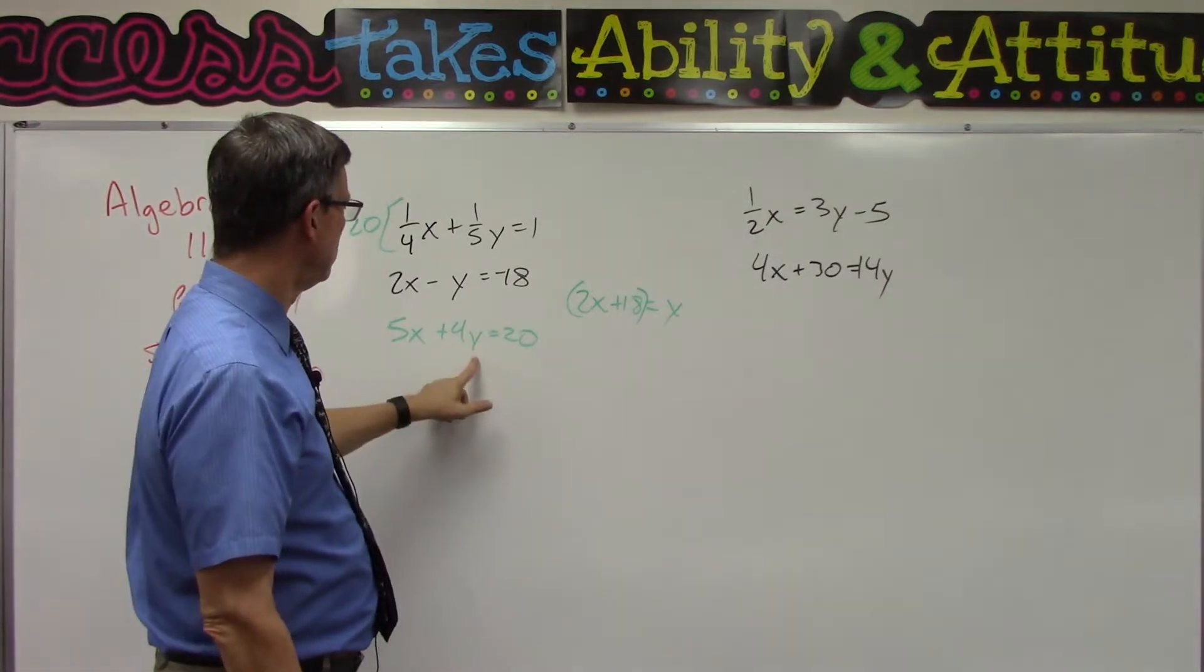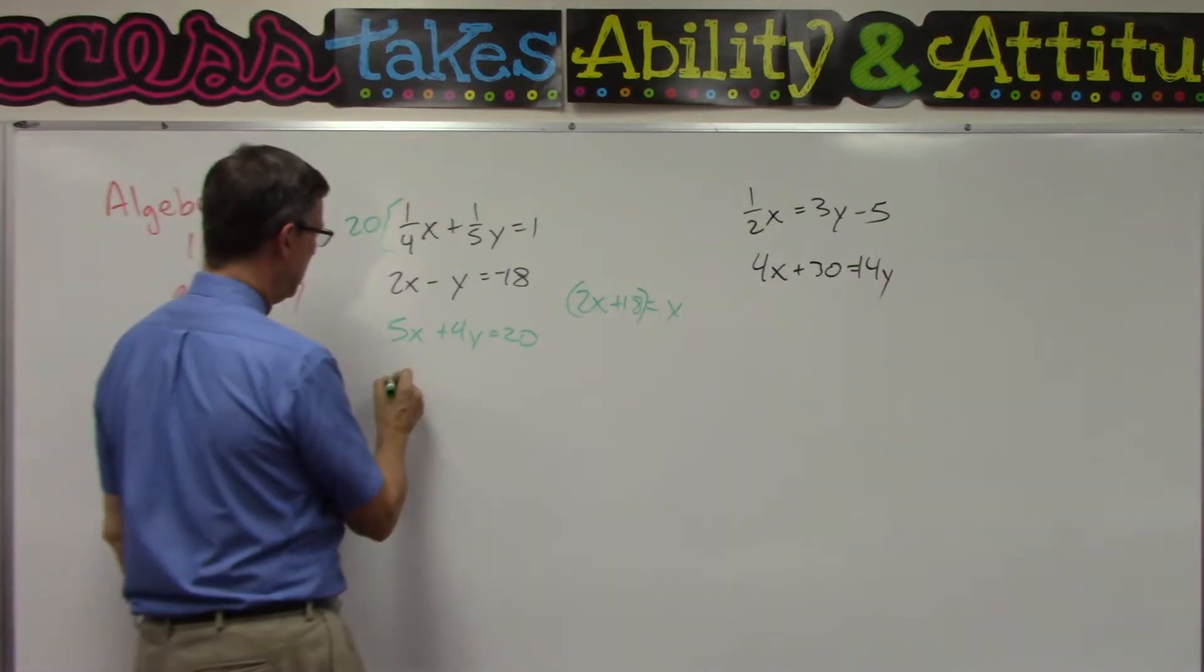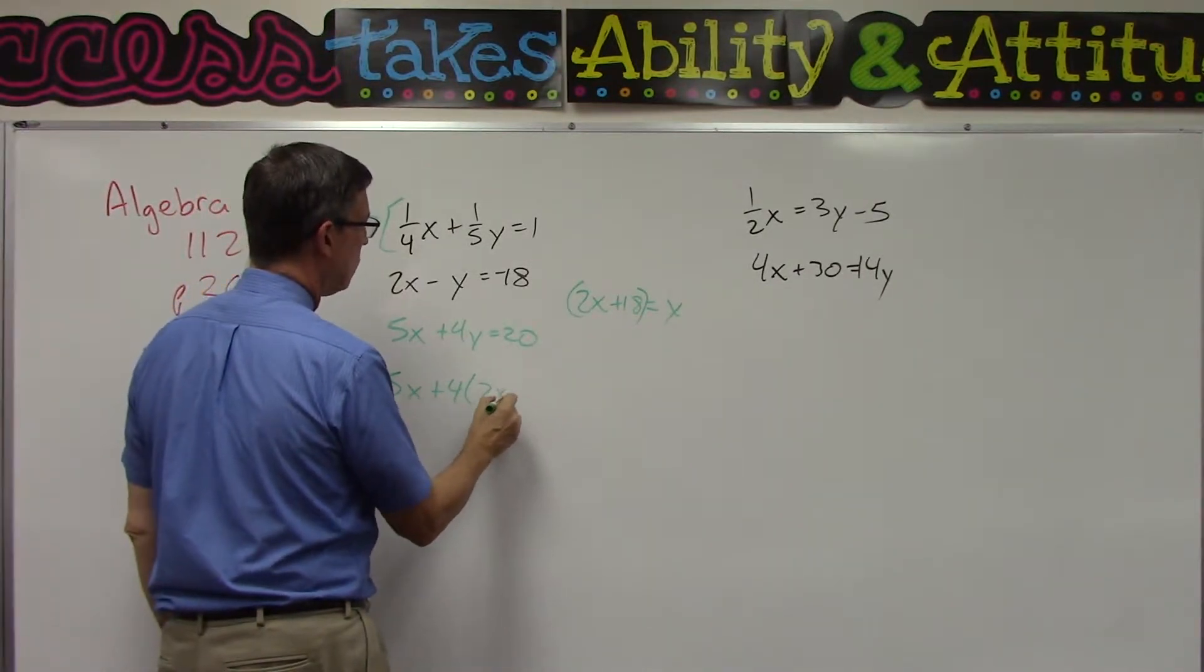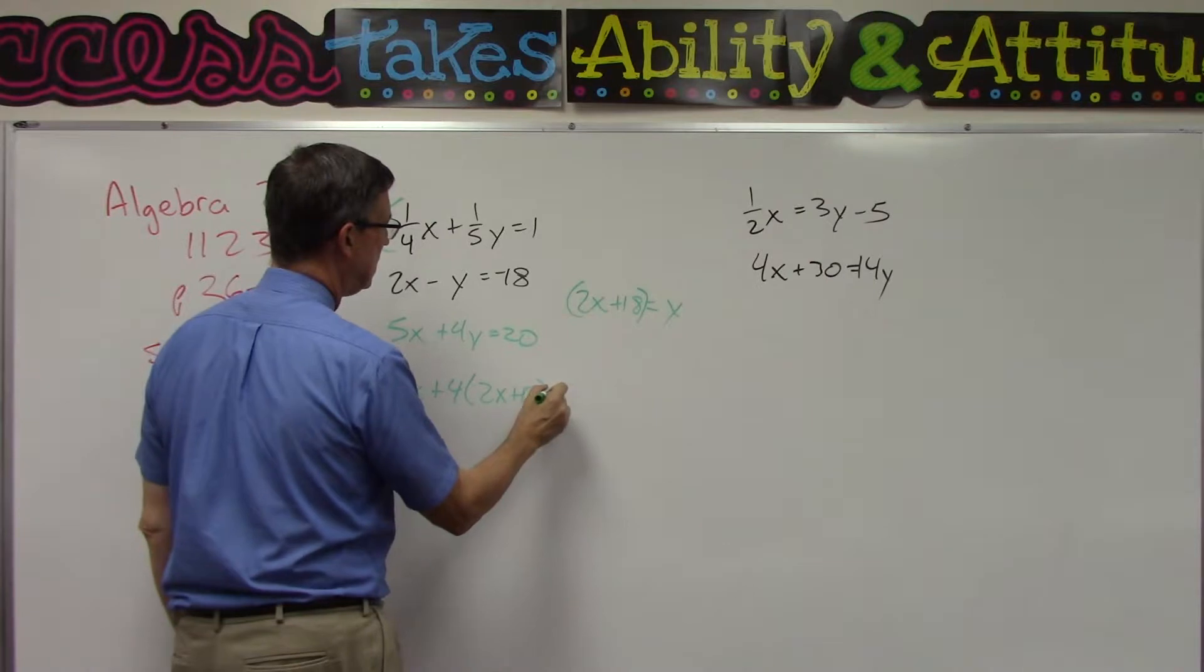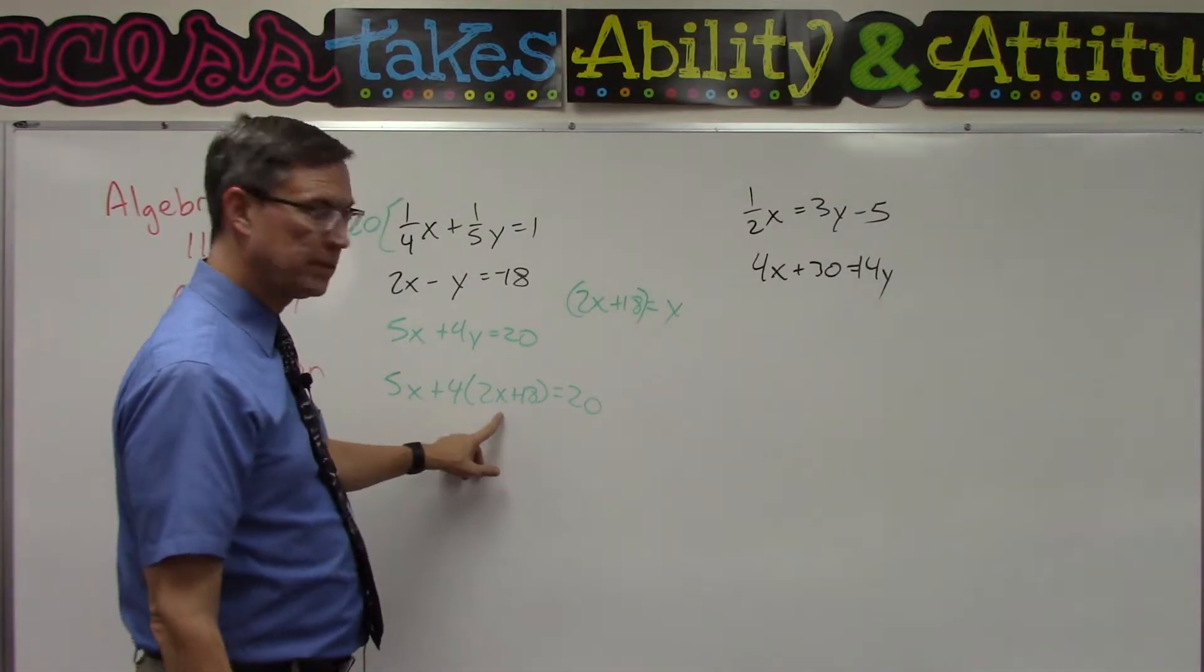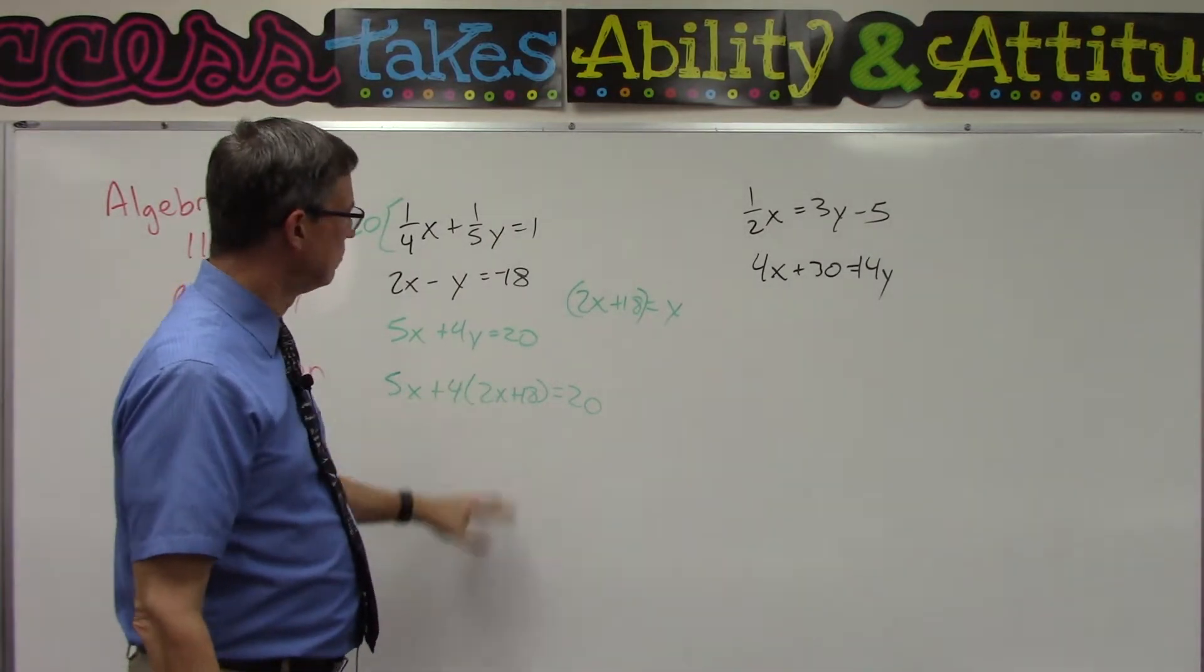Now I can take what Y is equal to and plug it in here. So I keep the 5x plus 4 times the quantity 2x plus 18 equals 20. And now we have everything in X.